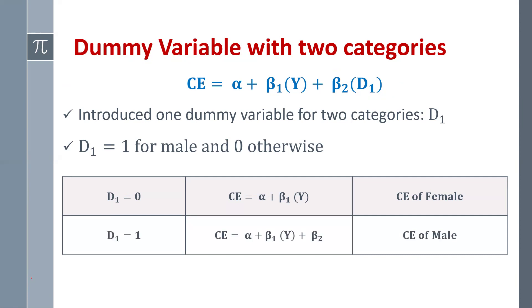When D1 equals 1, that represents male, so consumption expenditure equals alpha plus beta 1 times Y plus beta 2 — the consumption expenditure of male. This is how we introduce the dummy variable with 2 categories: D1 equals 0 shows consumption expenditure of female, and D1 equals 1 shows consumption expenditure of male.